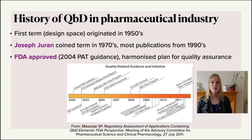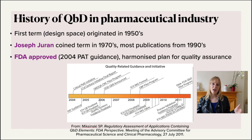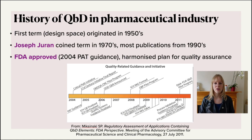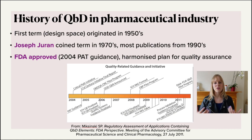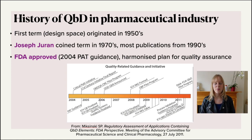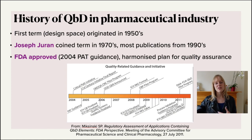If you look at design space — the range or variation you can have in your process parameters or within your critical quality attributes — this was already documented in the 1950s. The person who coined the term and published some very influential papers in the 1990s was Joseph Juran, and that started roughly around the 1970s. So you can see there was quite a bit of delay in actually getting this to the FDA.